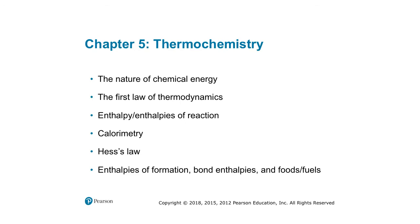That takes us through Chapter 5: the nature of chemical energy — ions attract if opposite in charge, bonds require energy to break and give energy when made; the first law of thermodynamics — A to B versus B to A, flipping reaction flips delta H; understanding enthalpies of reaction and how to get them through calorimetry; Hess's law for rearranging reactions; and using enthalpies of formation and bond enthalpies. We may also get into a discussion of foods and fuels as we get through the chapter.